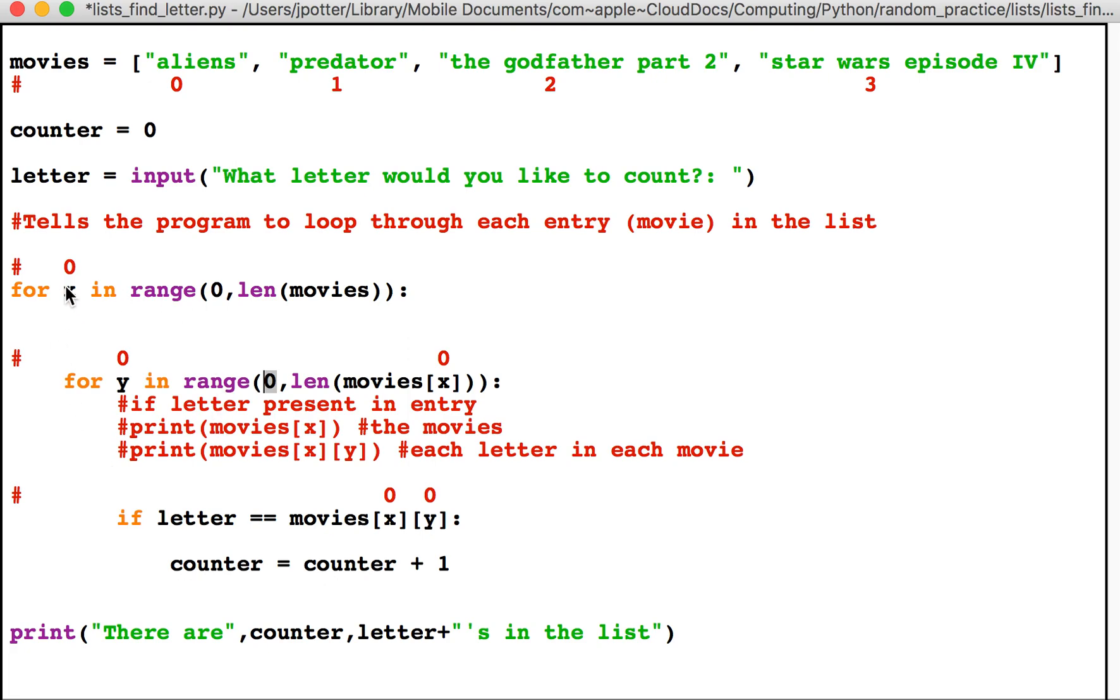But the first time it runs is zero, so what is at movies, which is the list name, and position zero? That is 'aliens'. Okay, so it will look in there, and if the letter the user types in, let's say for example they type in 'a', if it matches this statement here...